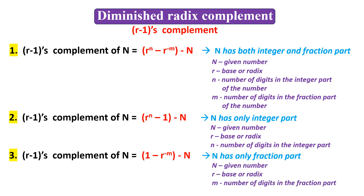The third formula is used when there is only a fraction part — there is no integer part. This is also derived from the main formula. Since there is no integer part, the number of digits in the integer part becomes 0, so r to the power of 0 equals 1. The formula becomes: 1 minus r to the power of negative m, minus N. If you remember the main formula, you can derive all other sub-formulas to find the R minus 1's complement.